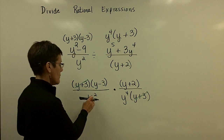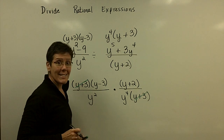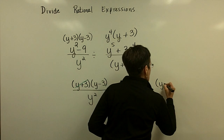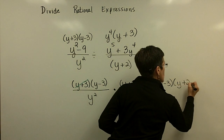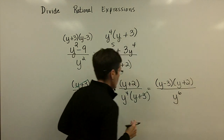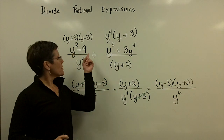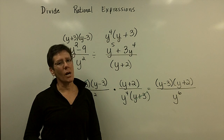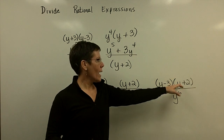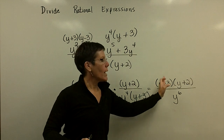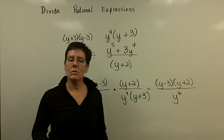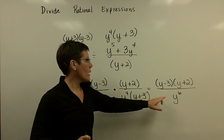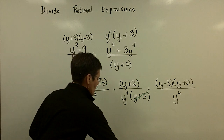I don't see any other common factors, so I put y squared and y to the fourth together as y to the sixth, because when you multiply you add exponents. Upstairs I have y minus three and y plus two as binomials. In a division problem we don't bother to FOIL these — we leave them in factored form. The only multiplication we do is y squared times y to the fourth equals y to the sixth.